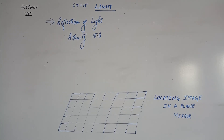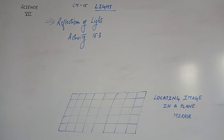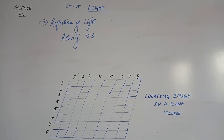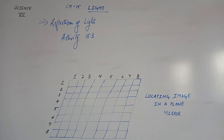Let's move forward to Activity 15.3. In this activity, we will understand how the image is located in a plane mirror. Take a chess board. If a chess board is not available, draw on a chart paper 64 squares — that is, 8 by 8 squares of equal size. Draw a thick line in the middle of the paper and fix a plain mirror vertically on this line. Place any small object such as a pencil sharpener at the boundary of the third square from the mirror. Note the position of the image. Now shift the object to the boundary of the fourth square and again note the position of the image. Did you find any relation between the distance of the image from the mirror and that of the object in front of it?